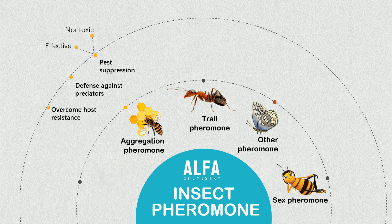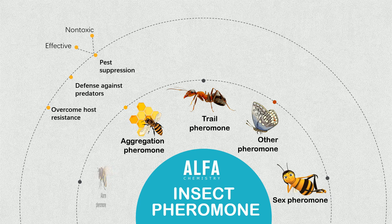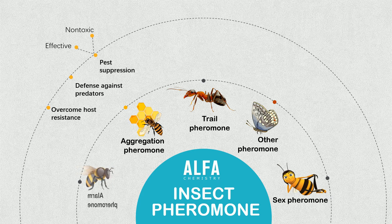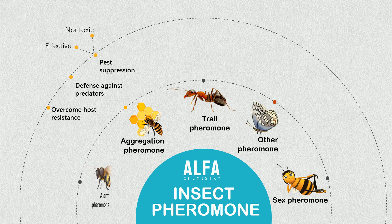Some species release a volatile substance when attacked by a predator that can trigger flight or aggression in members of the same species. For example, Vespula squamosa uses alarm pheromones to alert others to a threat.